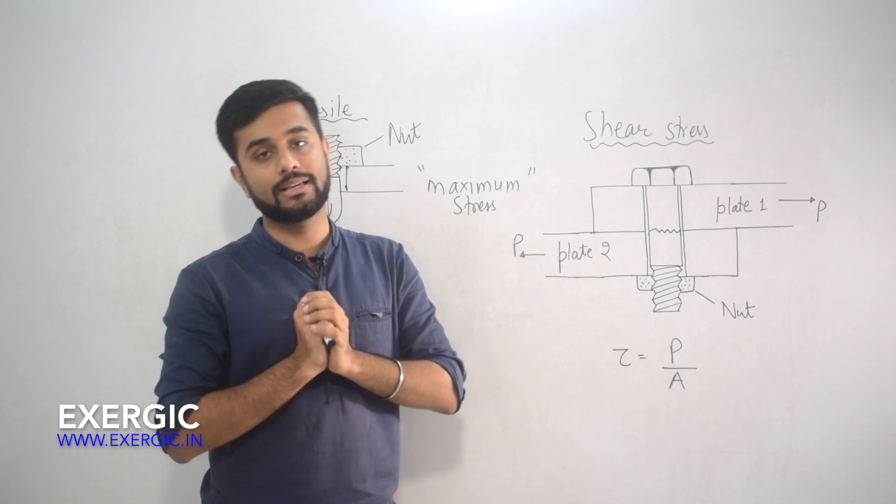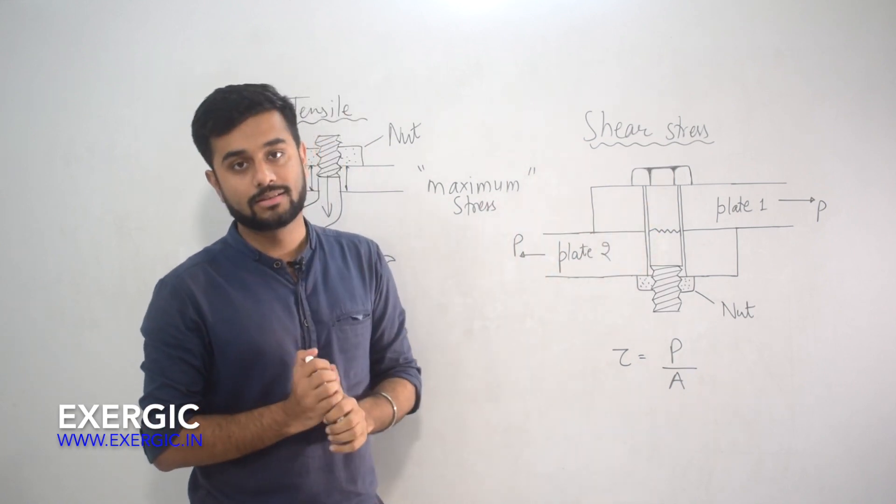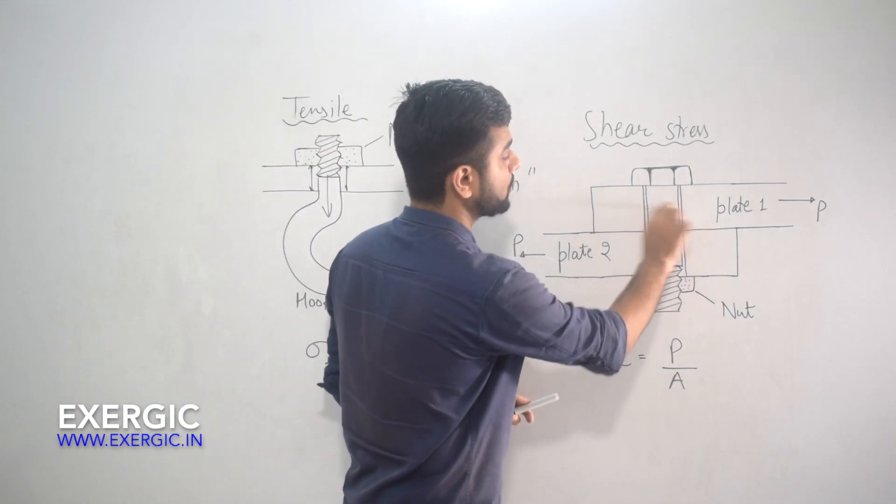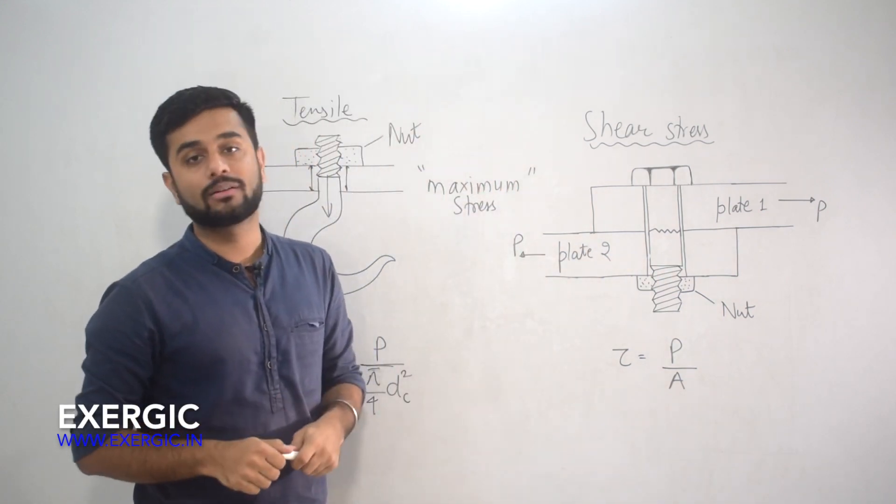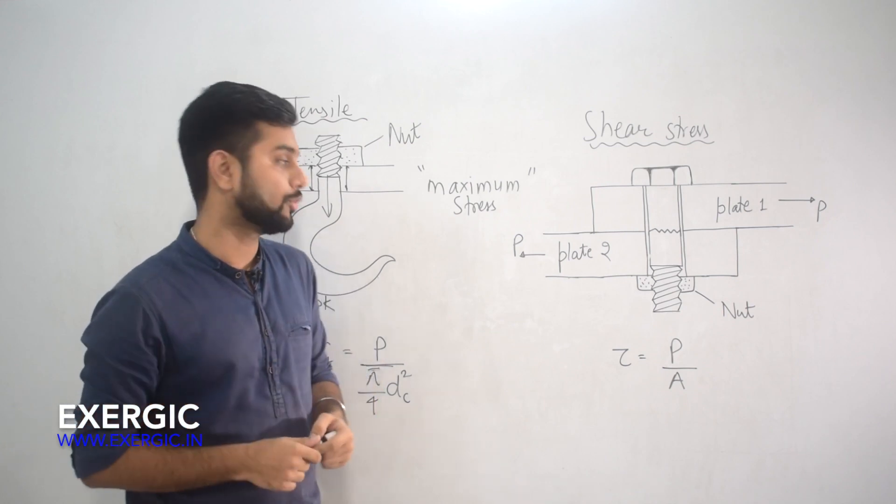Now some of you may say that it is nominal diameter because in the diagram you have drawn it like this. What if the threaded part was extending here up to this point? Then nominal diameter won't be the diameter at that part. This thing may come to your mind.